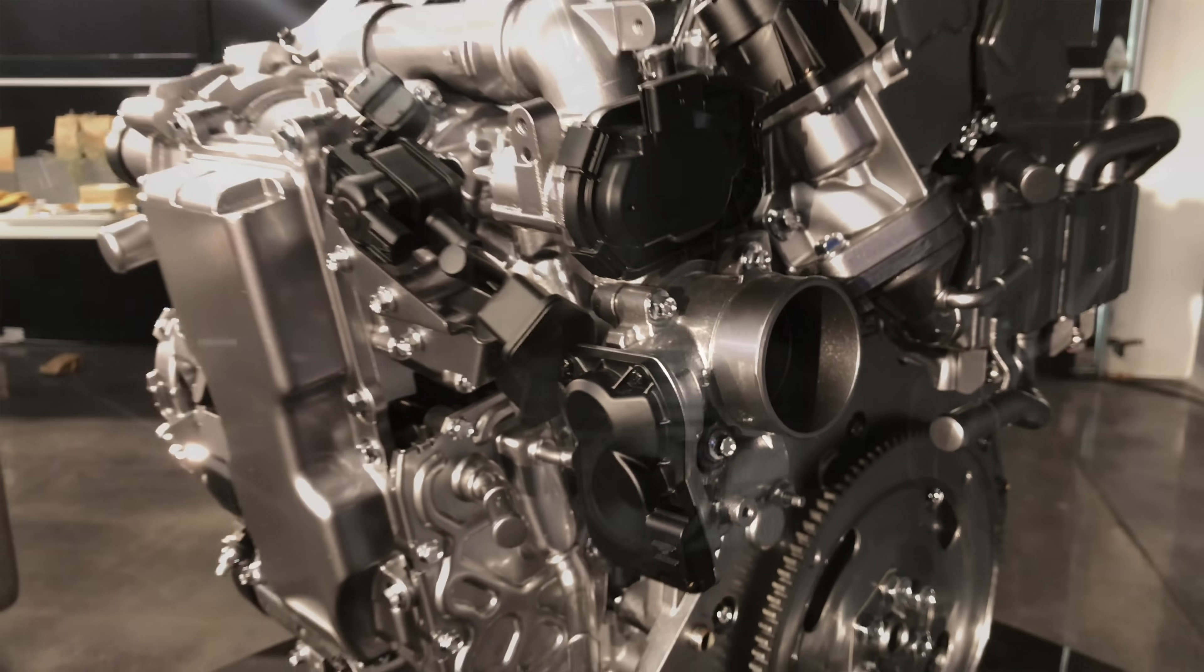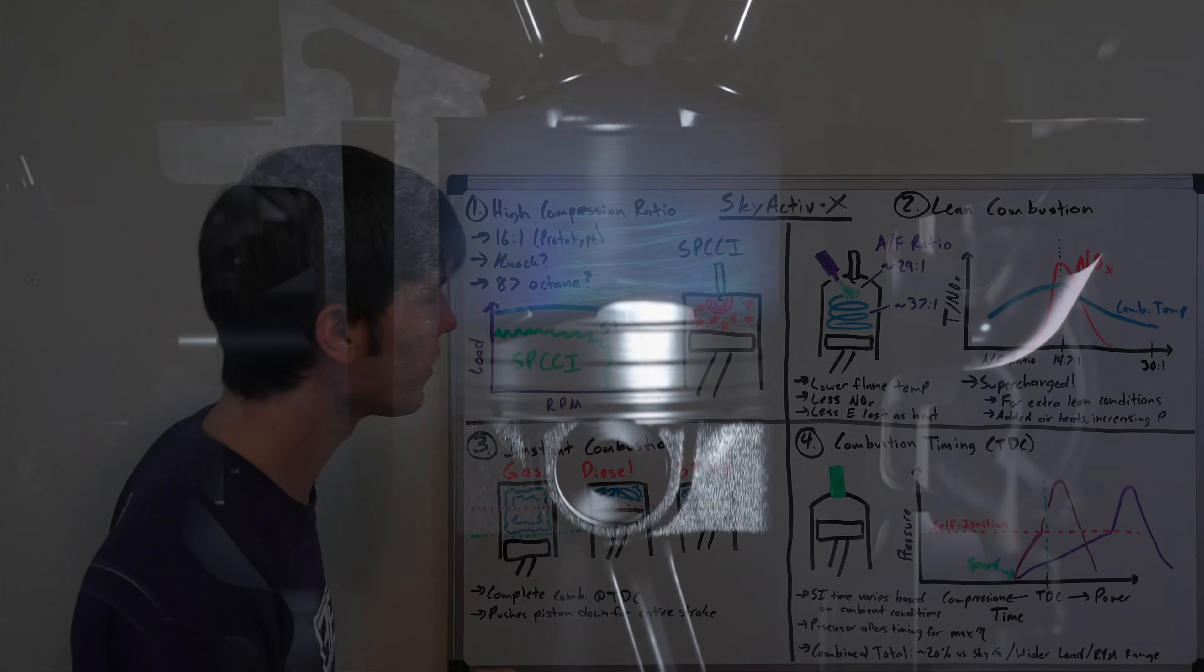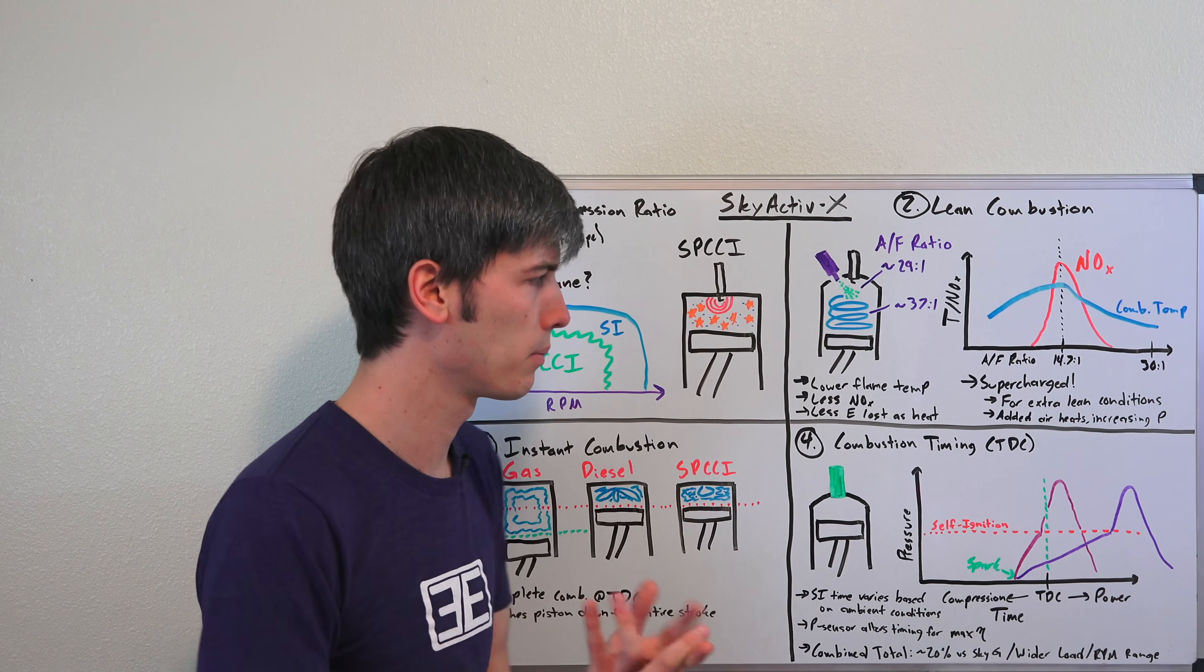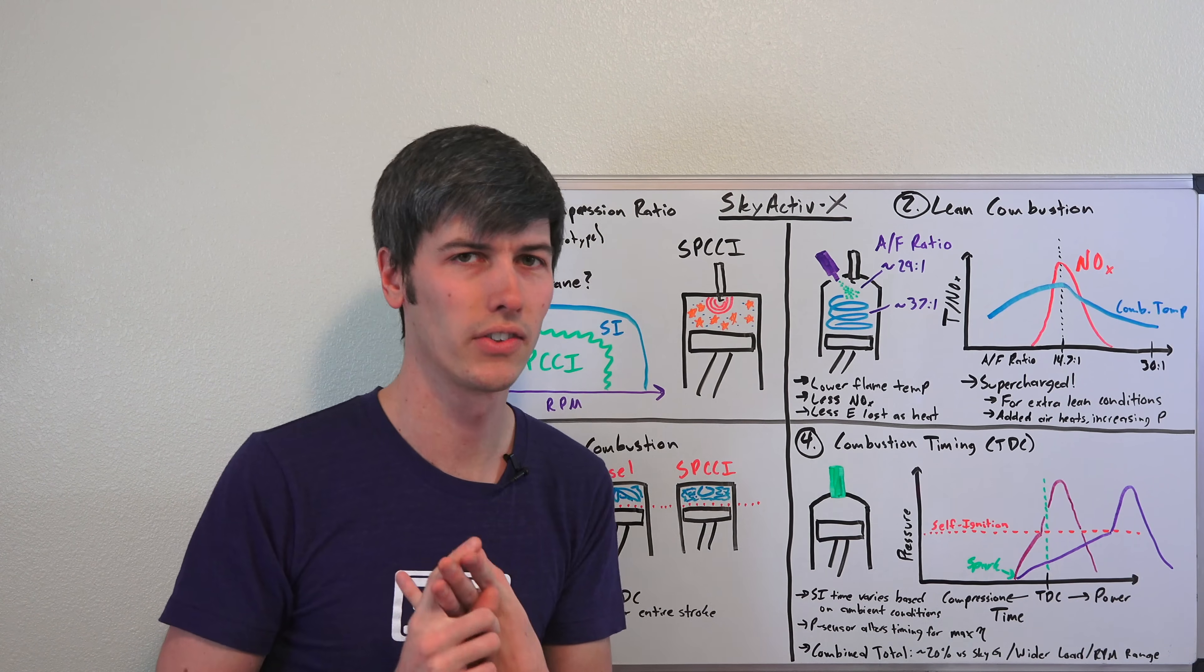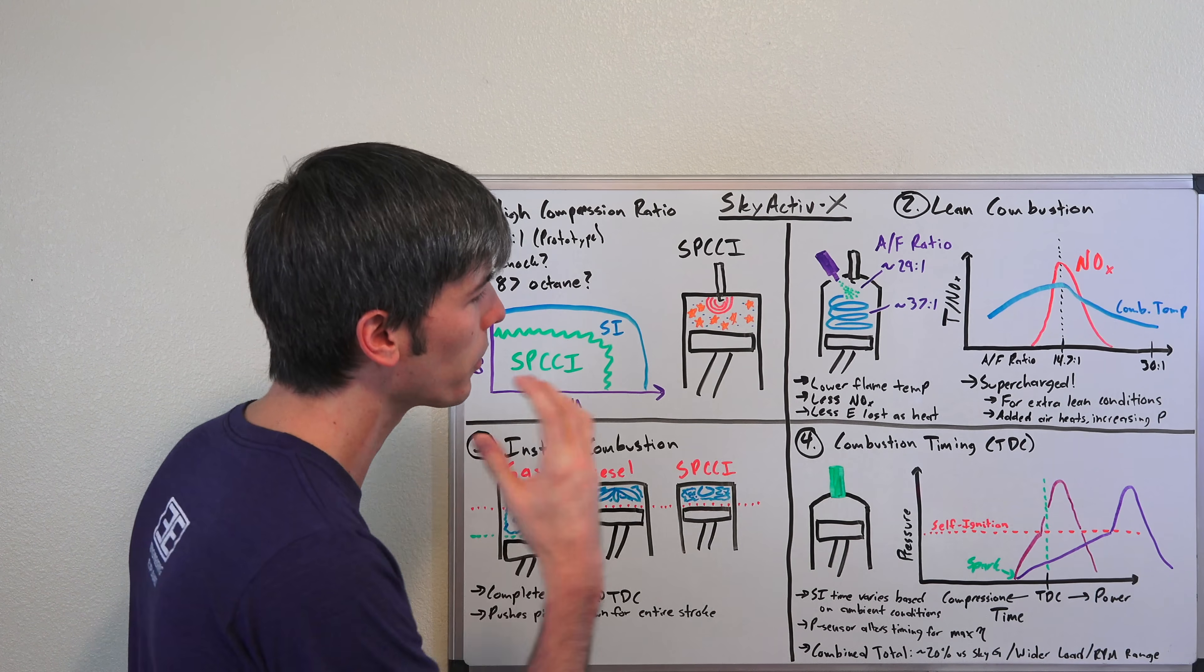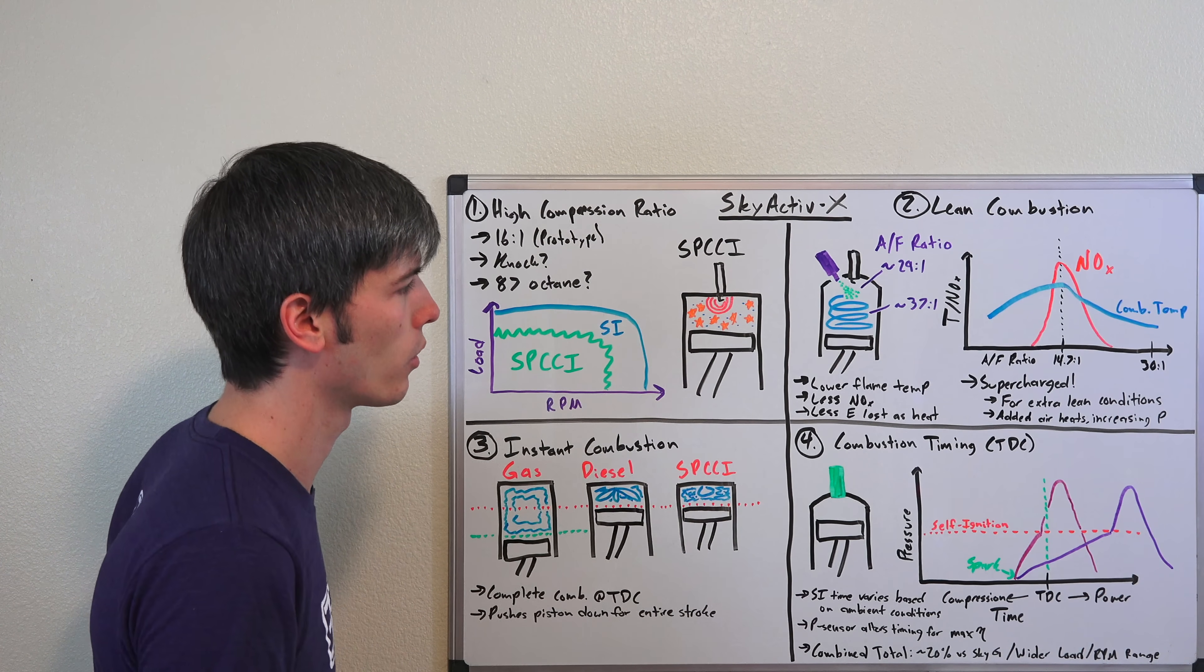It has high compression ratio, that's one thing. Another thing you want is lean combustion. The reason why you want lean combustion is lean combustion gives you lower flame temperatures, less nitrous oxide emissions, and less energy lost as heat. So it means it's going to operate more efficiently.